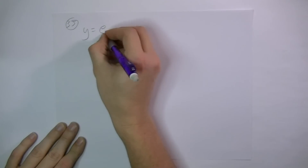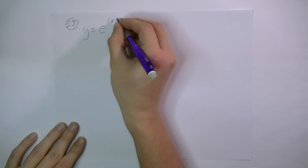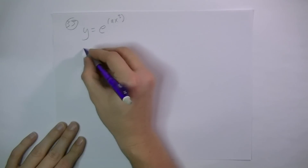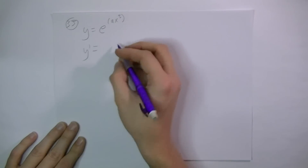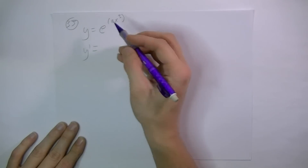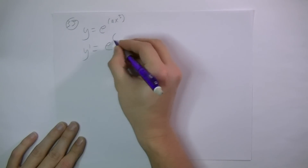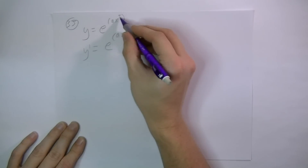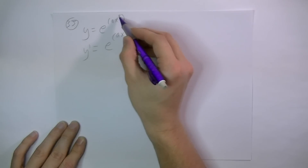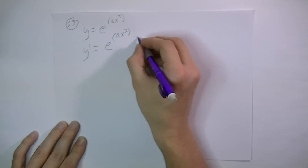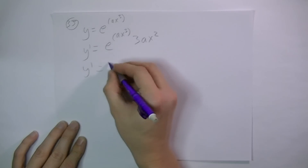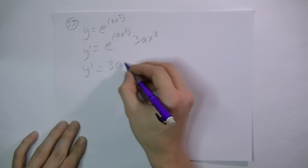Number 35. y equals e raised to the ax cubed power. I'm going to put everything in the exponent here in parentheses. So y prime equals — we'll have to do the chain rule here. e to the x would still be e to the x, so this will be e to the ax cubed. Then the chain rule requires taking the derivative of the inside, which will be 3ax squared. If you want to rearrange, we would normally put the constants out in front.